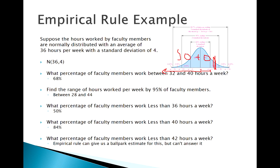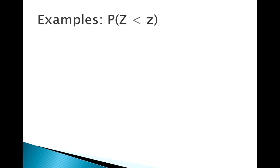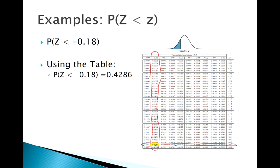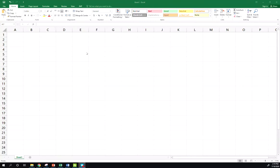This is where the standardizing process comes in. Before we standardize, let's make sure we have the mechanics of the z-table down. Find the probability of a z-score being less than negative 0.18. It's a less than problem, so using the table, I look up where it falls. Most z-score tables have the z-score to one decimal place in one column and the second decimal place across the top — find where they intersect. The table gives the area to the left, so I just grab that value.